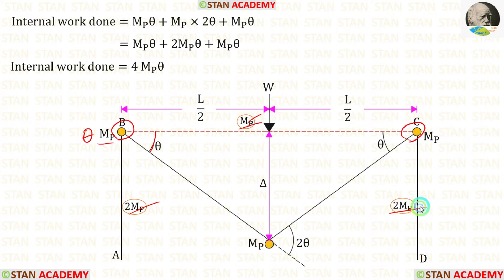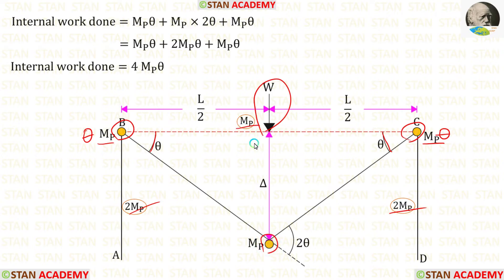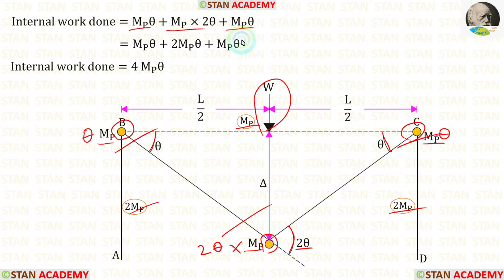MP is smaller than 2MP, so we select MP and multiply by angle θ. Under the point load we have a plastic hinge; we multiply MP by angle 2θ. Adding all three terms, the internal work done equals 4MP·θ.